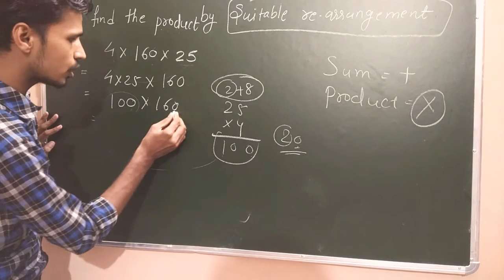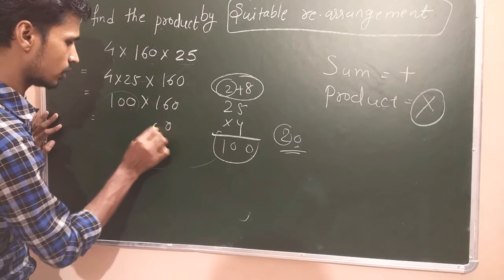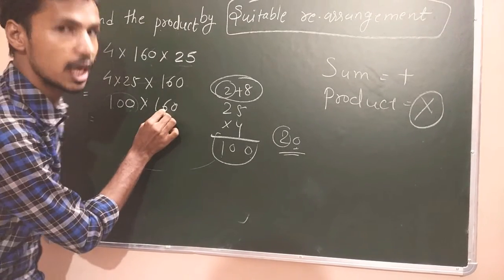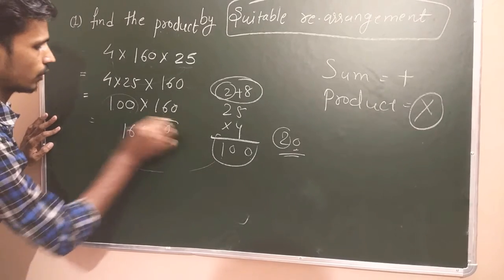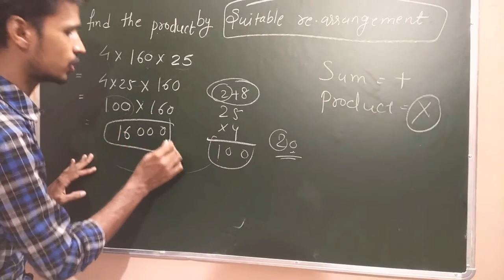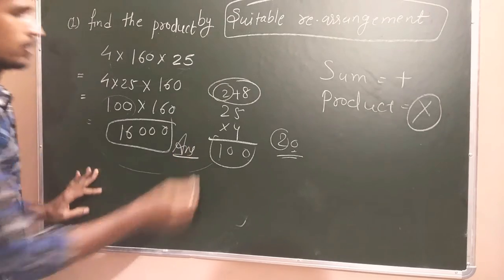Now count zeros: 1, 2, 3. Add them: 1, 6, 0. So answer is 16,000. This is our answer.